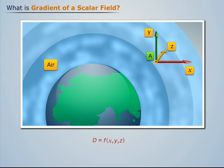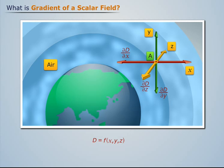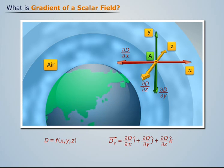Point A has a density D. If we take the partial derivative of D at point A with respect to the axes X, Y, and Z, and then add them using the vector sum, we get a vector quantity.